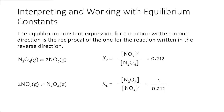So if I have this reaction — N2O4 being converted to 2NO2 — my equilibrium constant expression would be equal to the concentration of NO2 squared (products raised to their respective coefficients) divided by the concentration of N2O4 raised to its respective coefficient. The value for this equilibrium constant is 0.212.